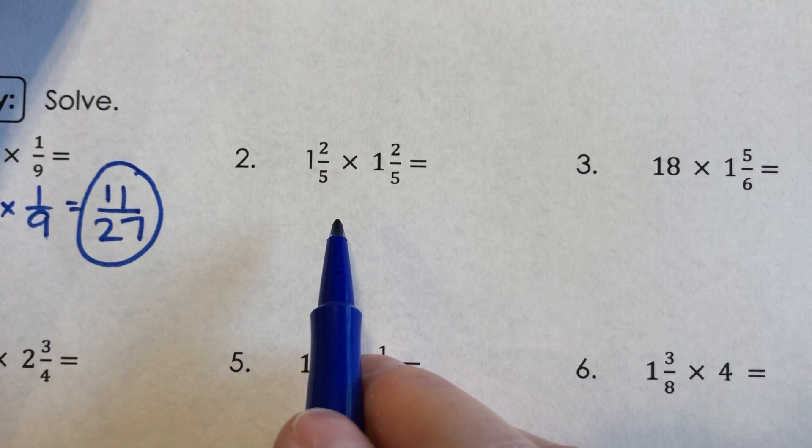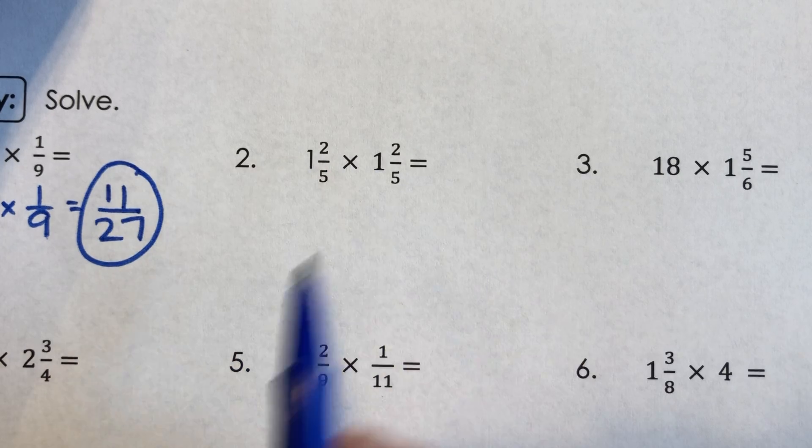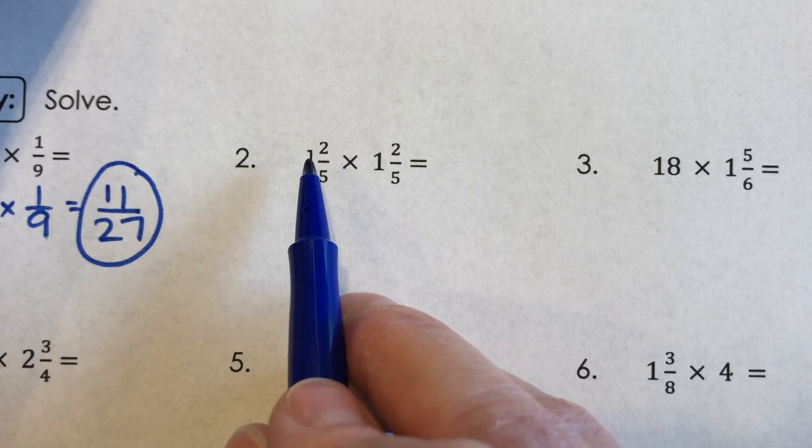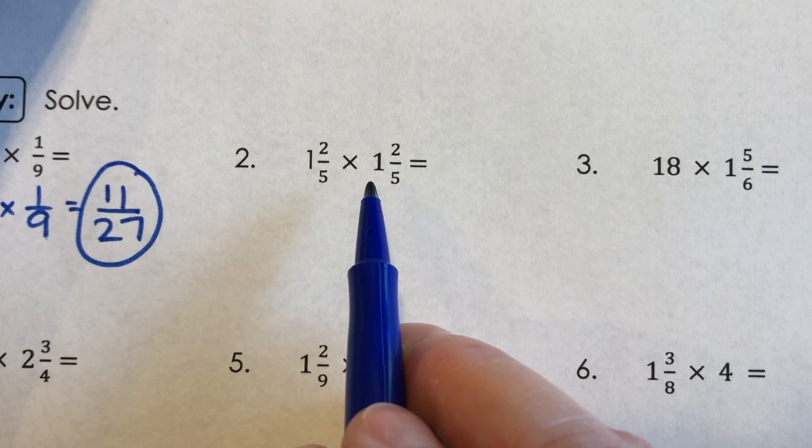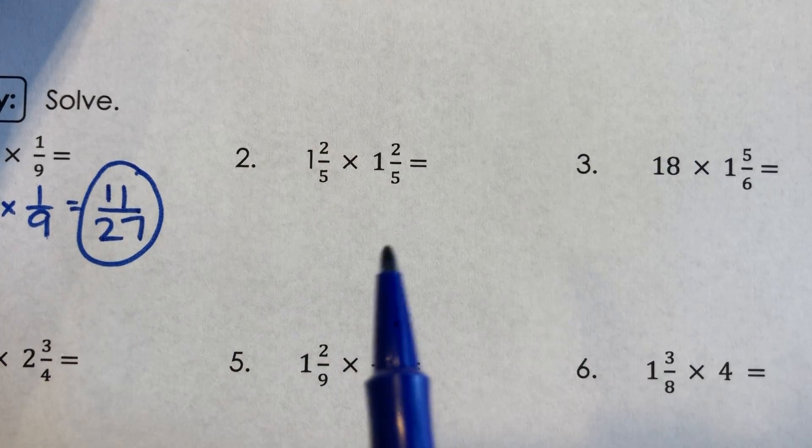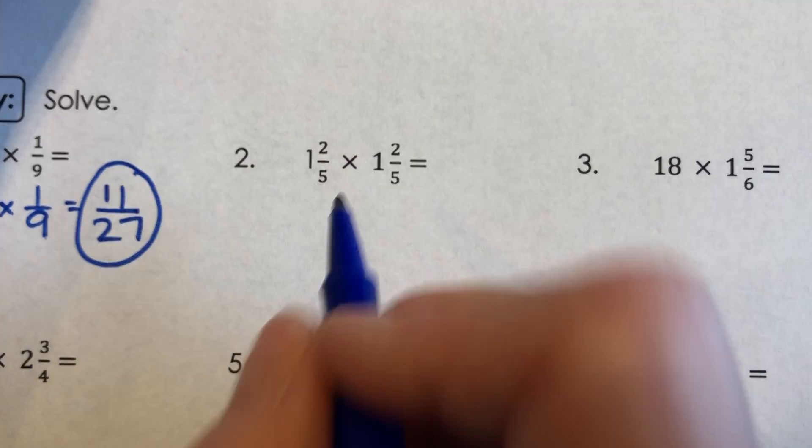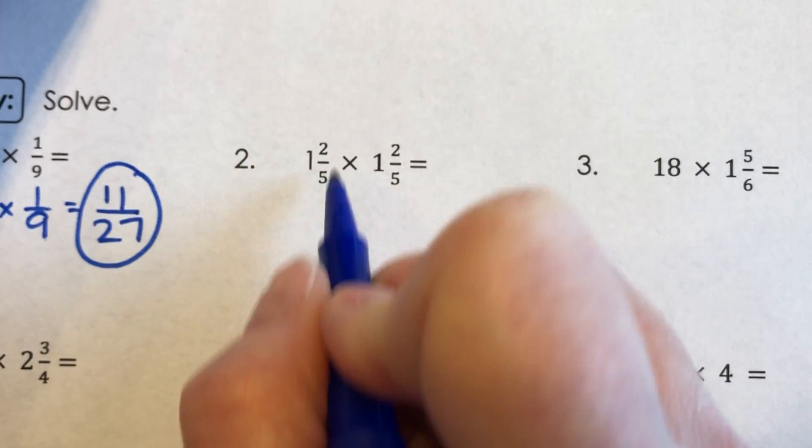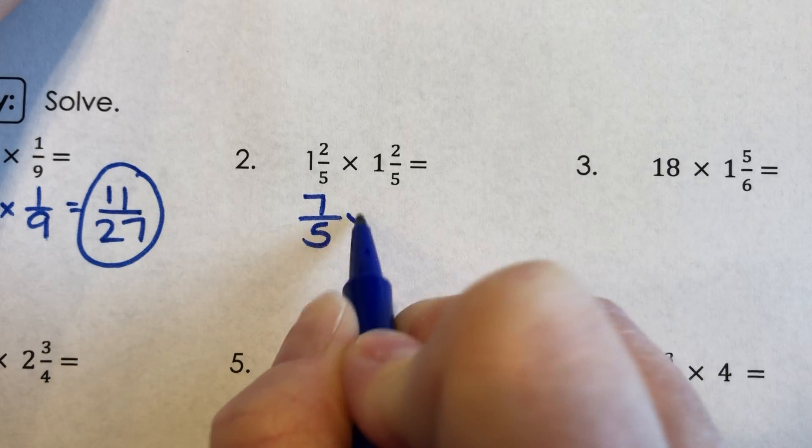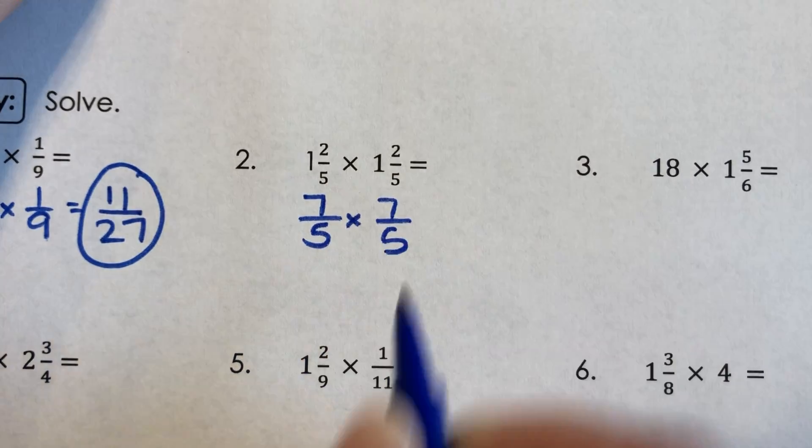Number two, 1 2/5 times 1 2/5. And again, we can't just say 1 times 1 and 2/5 times 2/5. That's not how this works. This means 1 plus 2/5 times 1 plus 2/5. So you can't just multiply it out. We saw that with our area model. We have to change these to improper. So 5 times 1 is 5 plus 2 is 7/5. And the good news is this one's also 7/5 because it's the same.